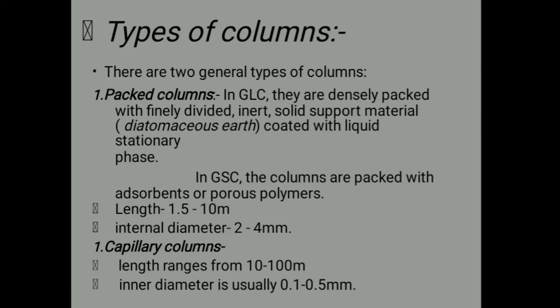Next we have types of columns. There are two general types. Packed columns: in gas liquid chromatography, they are densely packed with finely divided inert solid support materials coated with a liquid stationary phase. The support material is diatomaceous earth. In gas solid chromatography, the columns are packed with adsorbents or porous polymers. This is the difference between them.